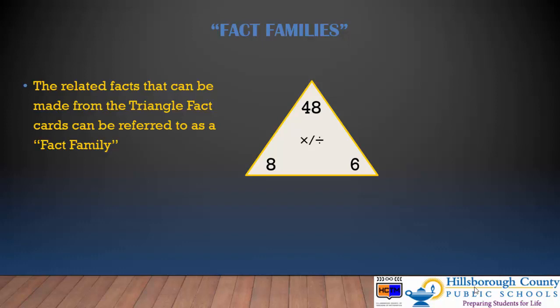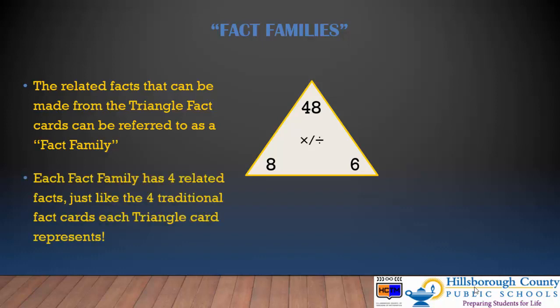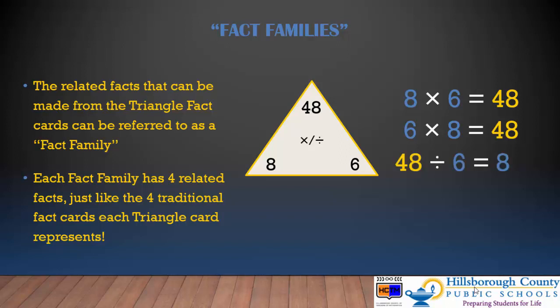The related facts that can be made from triangle fact cards can be referred to as a fact family. Each fact family has 4 related facts, just like the 4 traditional fact cards that each triangle card represents. So on this card, we see our 2 multiplication facts: 8 times 6 equals 48, and 6 times 8 equals 48. And also our 2 division facts: 48 divided by 6 equals 8, and 48 divided by 8 equals 6.